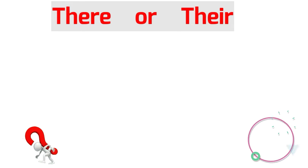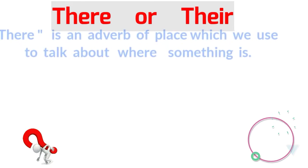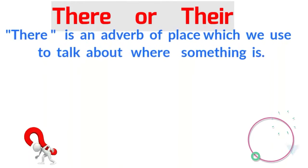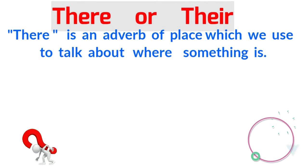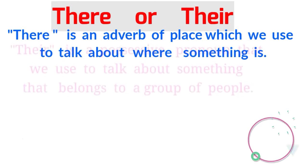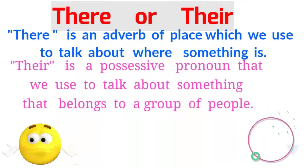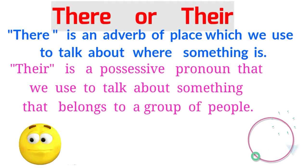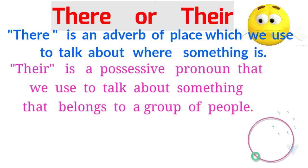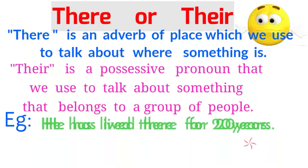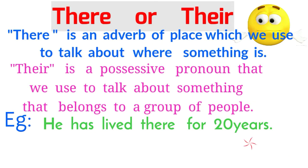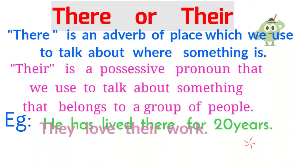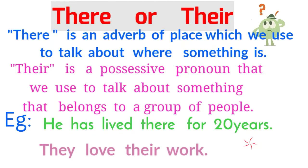There or Their. There is an adverb of place which we use to talk about where something is. Their is a possessive pronoun that we use to talk about something that belongs to a group of people. Example: He has lived there for 20 years. They love their work.